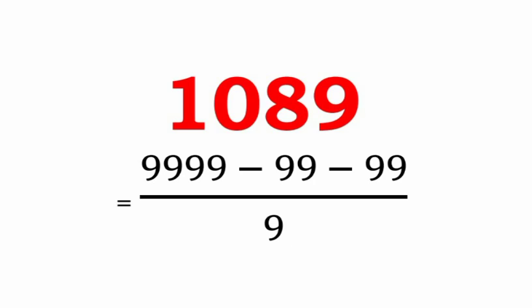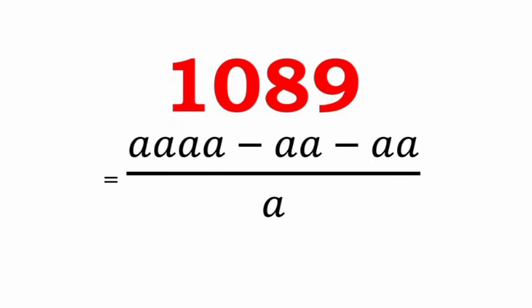From all the representations using digits 1 through 9, let's analyze the common pattern. In a general format, we can write 1089 as AAAA (a 4-digit number) minus AA (a 2-digit number) minus AA (another 2-digit number), whole divided by A, where A is the repeated digit being used to represent 1089.